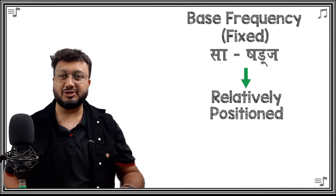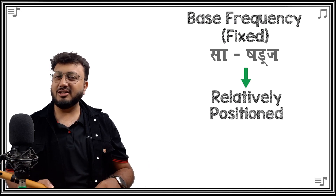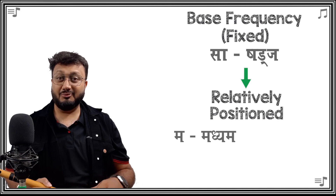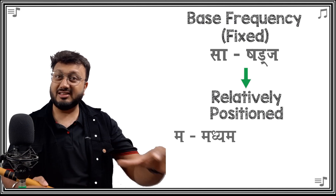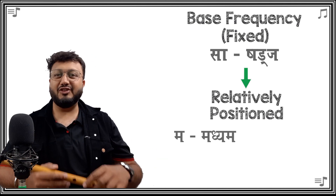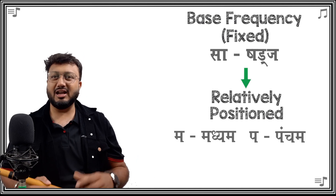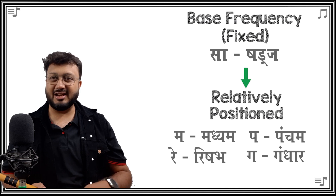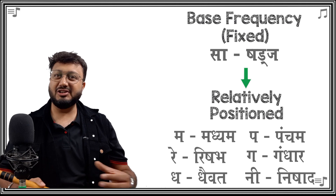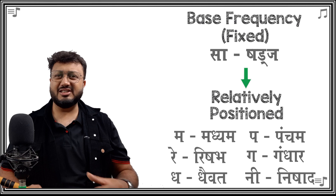Then we have two technical notes: ma or madhyam, which is the fourth note, meaning 'what is in the middle' as there are three notes before it and three notes after it. The fifth note is called panchama — pancha means five. The other notes are rishabha (the second note), gandhara (the third note), dhaevata (the sixth note), and nishada (the seventh note). Together they are called the sapta swara.